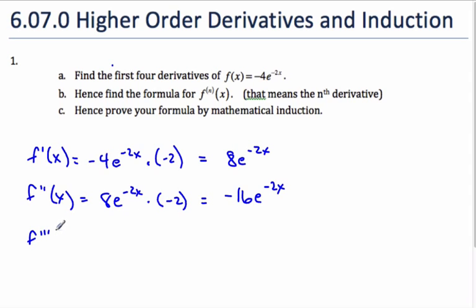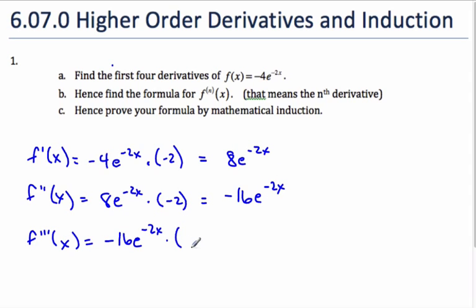Taking the third derivative: e to the x is just the same, and the chain rule says times the inside derivative, which is negative 2. I get 32e to the negative 2x.